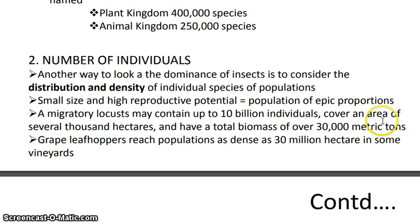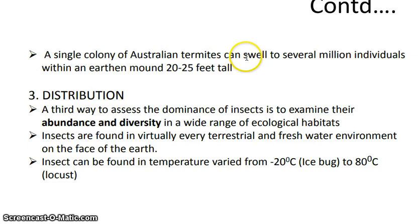We have witnessed devastating locust attacks on crops, with thousands, millions, and even billions of locusts present in a single swarm. When they migrate from one region to another, they cause total destruction of crops and plants. The grape leafhopper population can be as dense as 30 million per hectare. A single colony of Australian termites can swell to several million individuals within an earthen mound 20 to 25 feet tall.